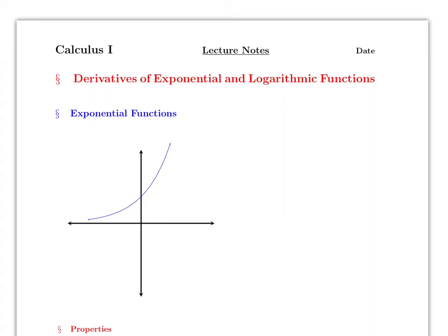In general, an exponential function looks like this. On the graph, the typical point is at (0, 1) — when x is zero, y is one. The function is a to the x, and we're going to focus specifically on where the base is e.